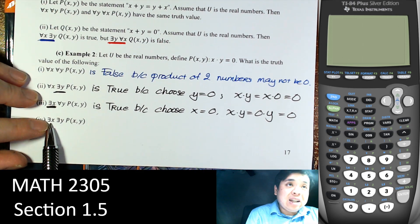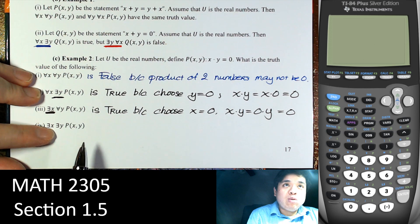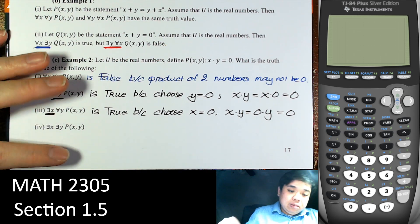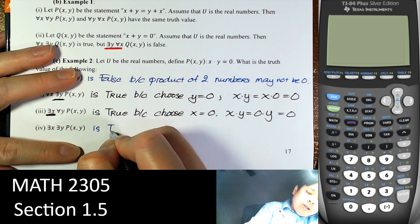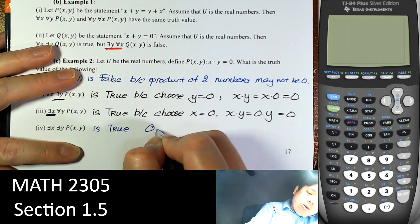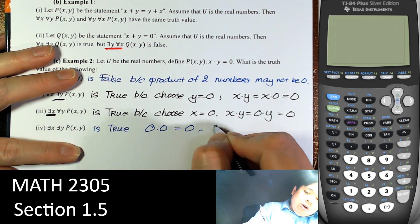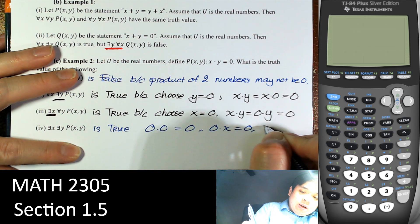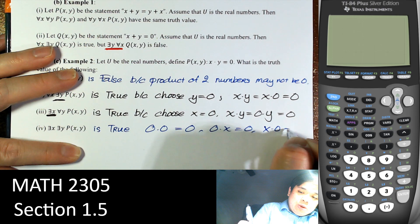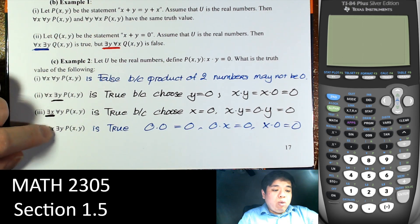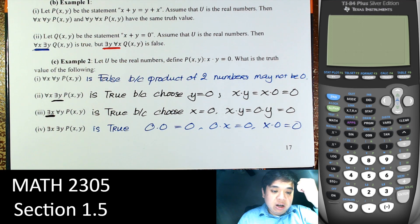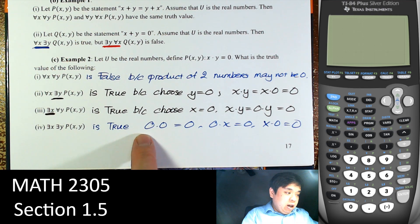And there exists x and there exists y such that P(x,y) equals 0 — this is true as well, because certainly 0 times 0 equals 0, or 0 times x equals 0, or x times 0 equals 0. Bottom line is, when we write like this, we can choose x to be 0 and y to be 0, and that gives us a true statement.